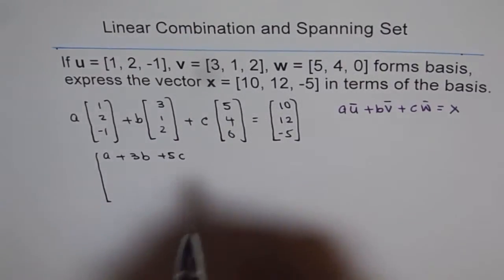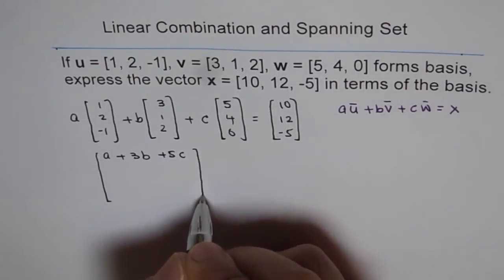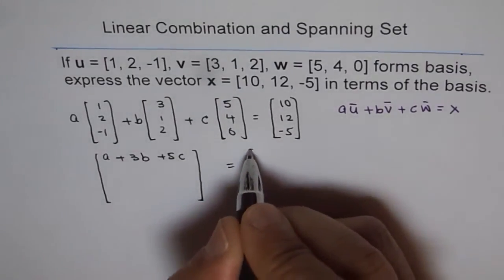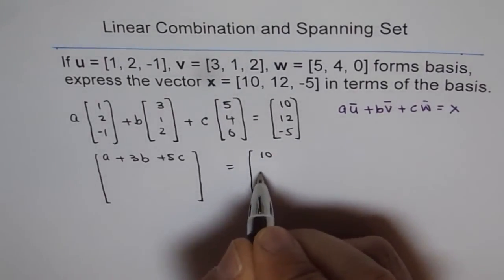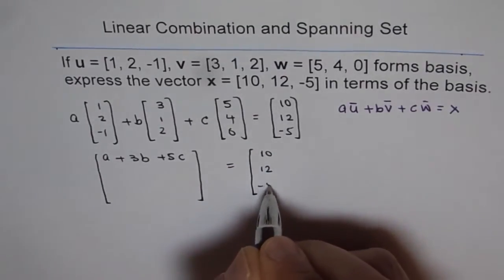So that is the matrix for us. And on the right side, we have 10, 12, minus 5.